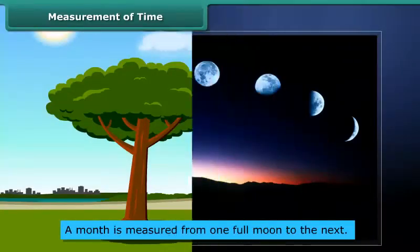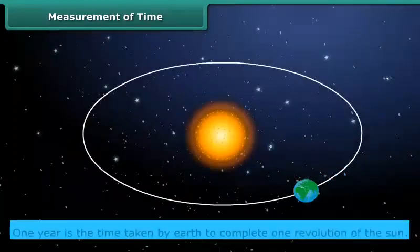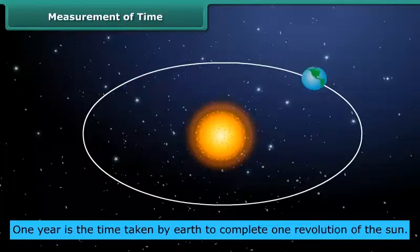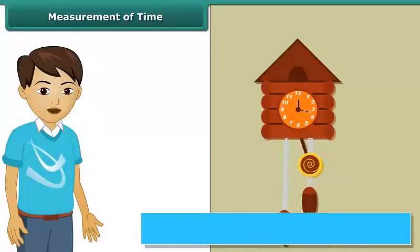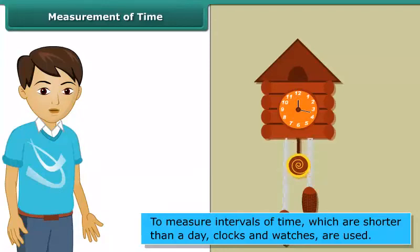Similarly, a month is measured from one full moon to the next. One year is the time taken by Earth to complete one revolution of the sun. To measure intervals of time which are shorter than a day, we use clocks and watches.